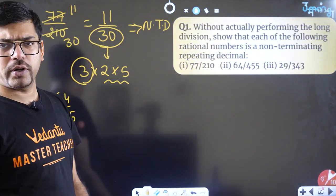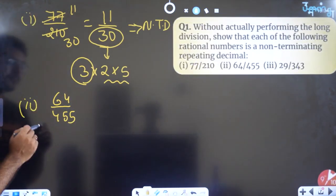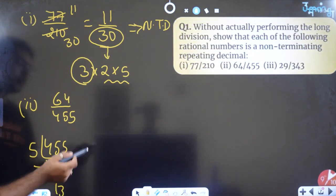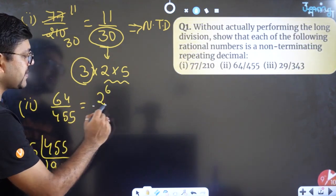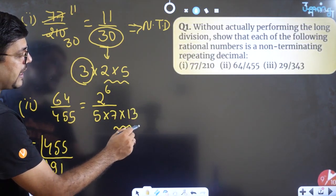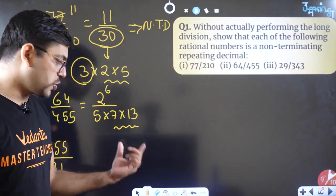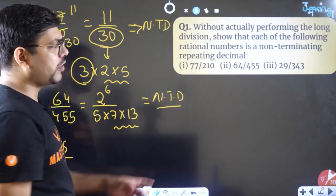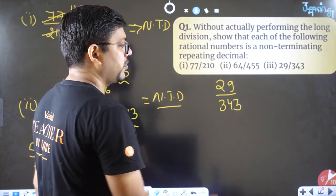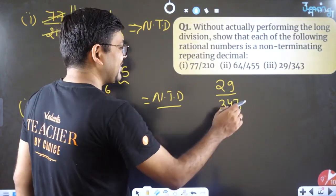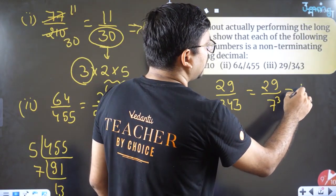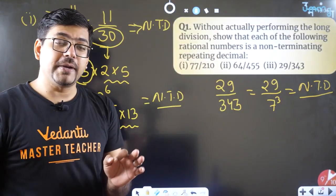Second example: 64 by 455. For 455, dividing by 5 gives 91, and 91 = 7 × 13. So 64 = 2⁶ and 455 = 5 × 7 × 13. There are non-friend numbers (7 and 13) in the denominator, so this is again non-terminating decimal. Third: 29 by 343. Here 343 = 7³ — a non-friend number — so this also gives a non-terminating decimal.